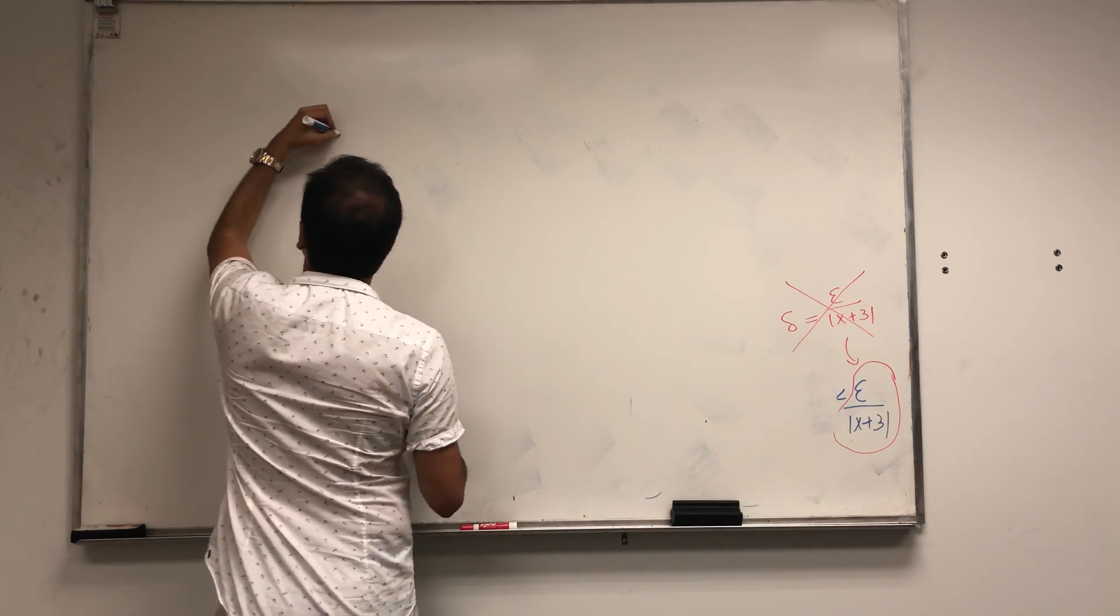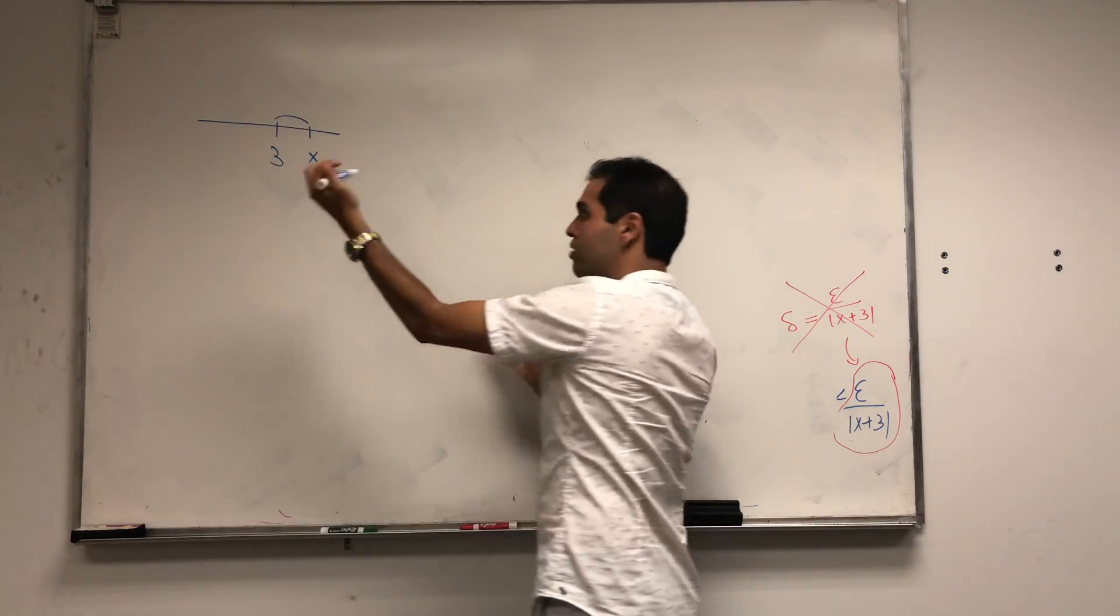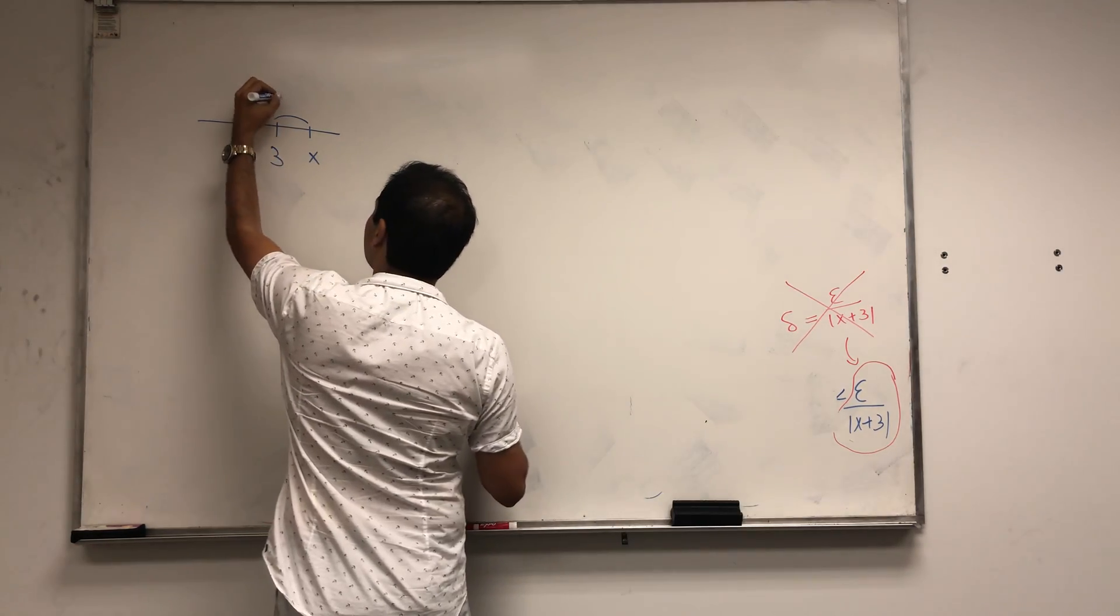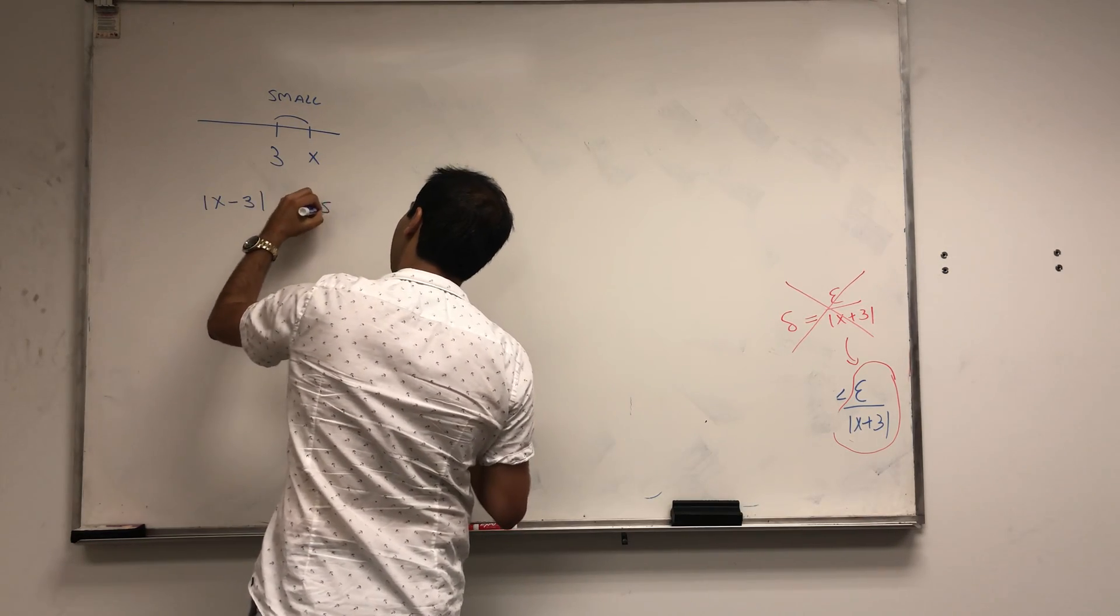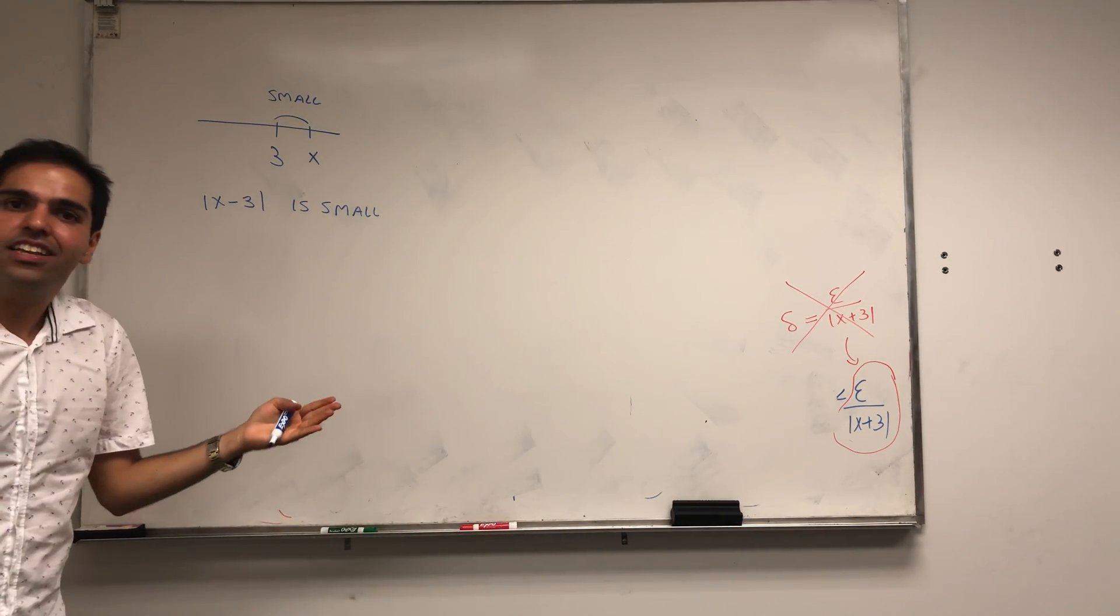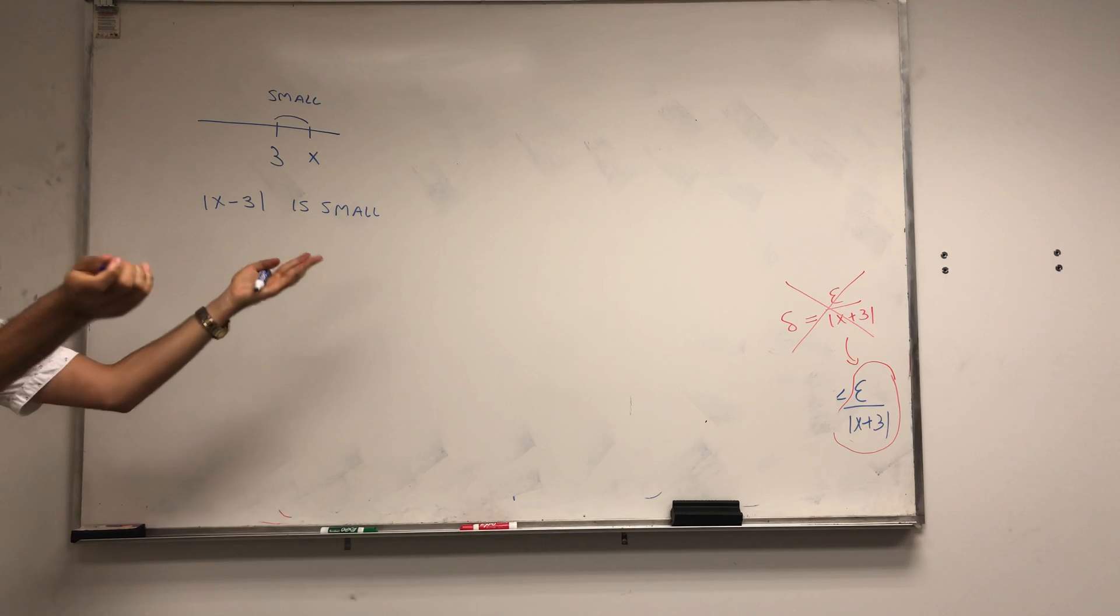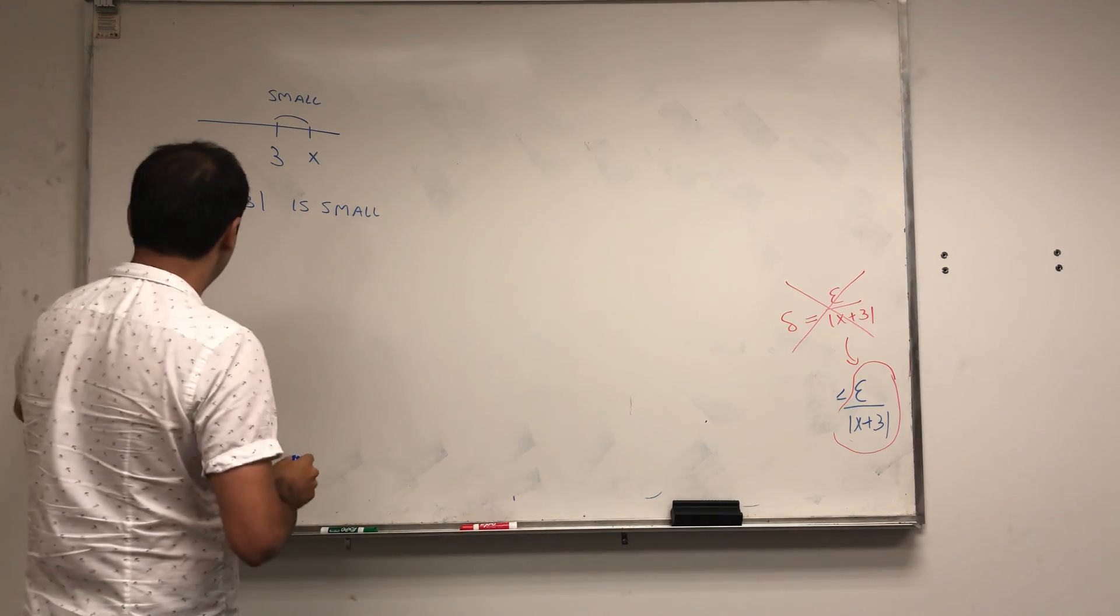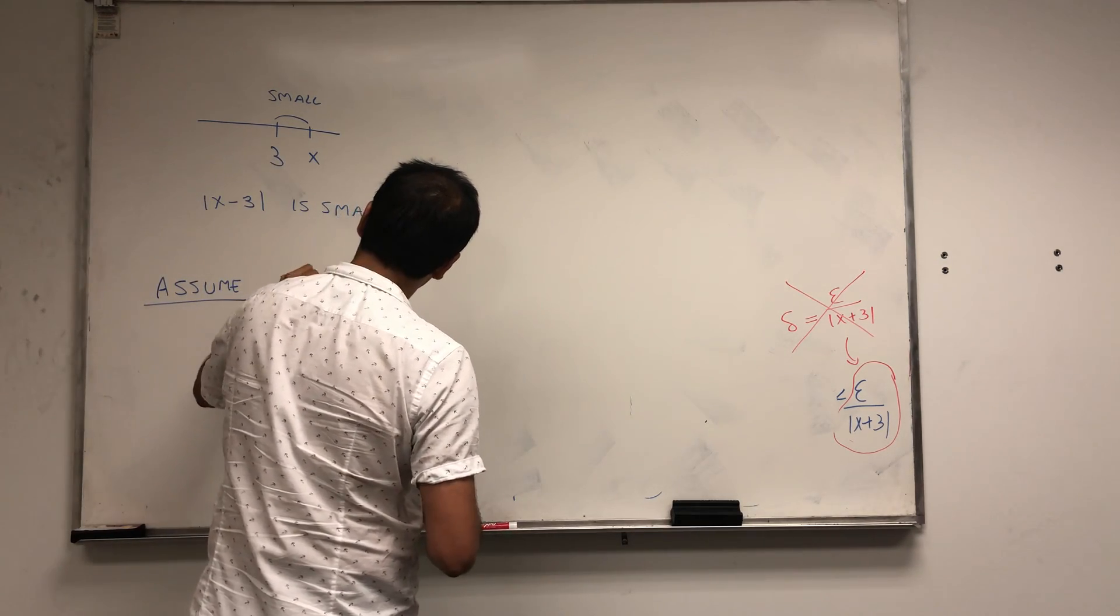Maybe a little picture. This is 3, and this is x. x and 3, they're very close together, so in particular the distance between those two is small. x minus 3 is small. Because it's small, it's totally okay to say that they're at most one unit apart. Let's assume that x minus 3 is less than 1.